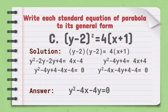For the right side of the equation, we have 4 times the quantity x plus 1. We will distribute 4 to the quantity x plus 1. So 4 times x equals 4x, and 4 times 1 equals 4, giving us 4x plus 4. Since the right side of the equation should equal 0 in general form, we will transpose 4x plus 4 to the left side. When we transpose it, 4x becomes negative 4x and 4 becomes negative 4. Now we have y squared minus 4y plus 4 minus 4x minus 4 equals 0.